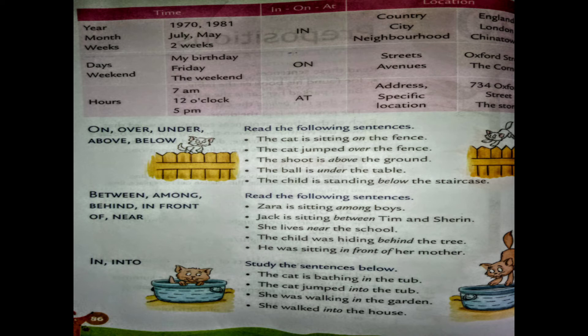Now we come to the next topic: between, among, behind, in front of, and near. 'Between' is used when we talk about two things — for example, between two objects. 'Among' is used for more than two — for example, Zara is sitting among the boys. 'In front of' — for example, he is sitting in front of her mother.